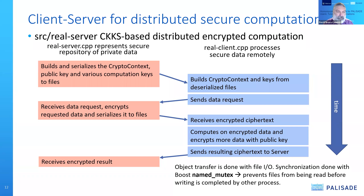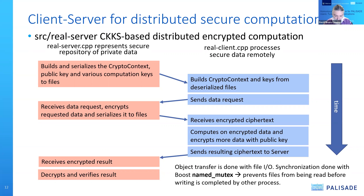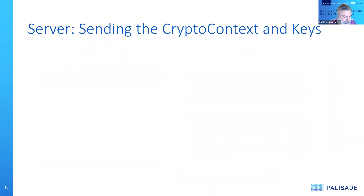The client receives this encrypted ciphertext and starts processing. For this example, some basic computation is done, and we also show that with the public key, the client can encrypt additional data from a different source. The computation results are sent back to the server. The server receives the encrypted result, and in a real-world situation might decrypt the answer and provide it back to the client — for example, if the client is doing statistical analysis of raw data where the raw data may be private but aggregate statistics are okay to share. In this example, the server simply decrypts and verifies the results.